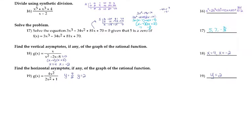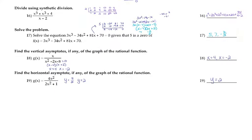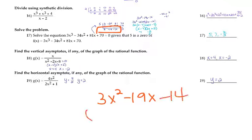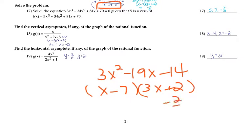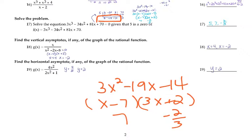Number 17 says solve the equation given that 5 is a zero. If 5 is a zero, put 5 on the outside and divide synthetically — you should get 0 as remainder. Then take the bottom row, which was 3x squared minus 19x minus 14, and factor it. Multiply 3 times negative 14 to get negative 42, find factors that add to negative 19 — that's negative 21 and positive 2. Factor by grouping gives x minus 7 and 3x plus 2. Solving gives negative 2/3 and positive 7. Including 5, the zeros are 5, 7, and negative 2/3.